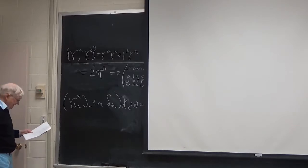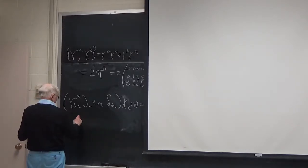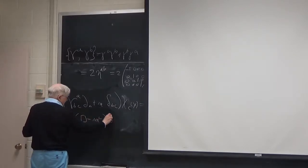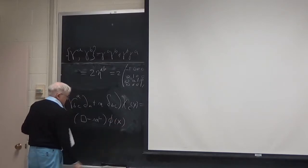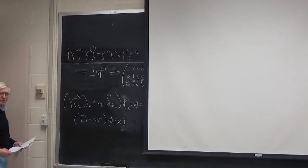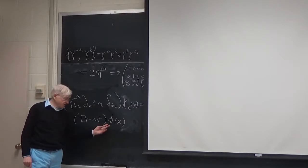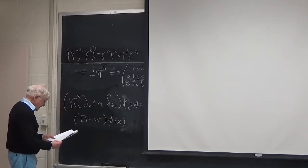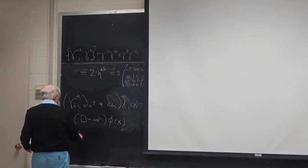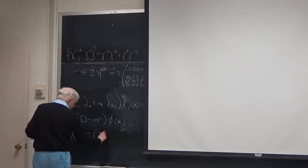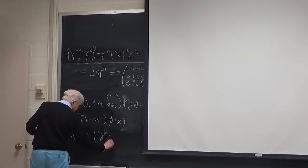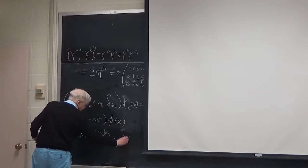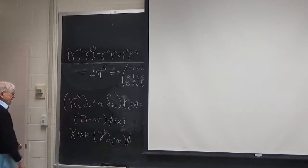It turns out that if you have a scalar field φ satisfying the Klein-Gordon equation for mass m, then a solution of the Dirac equation is (γ^B_D·∂_B minus m) applied to φ.